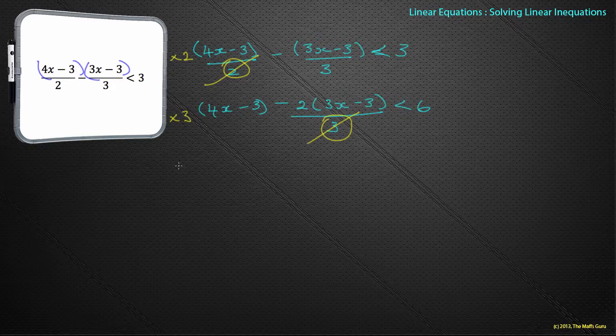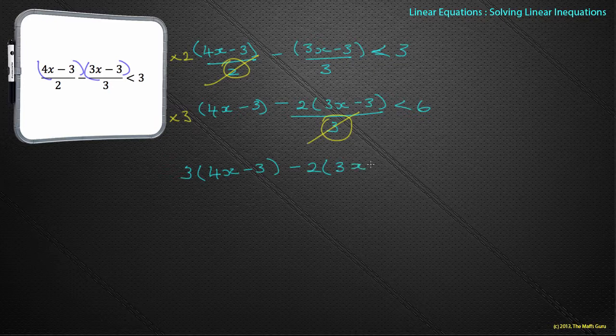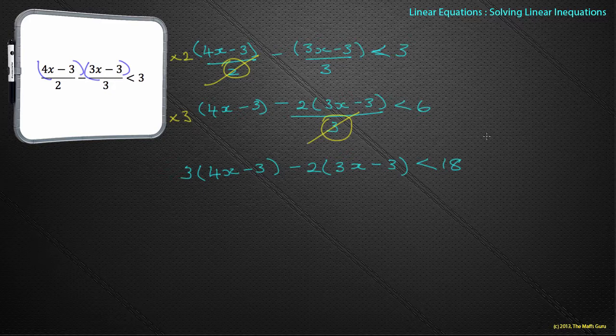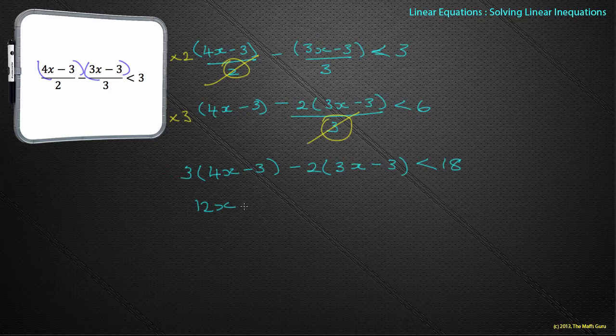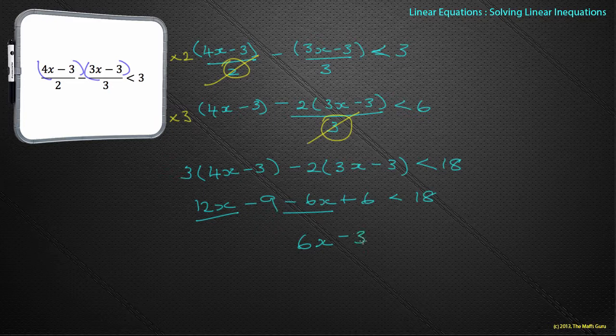Writing it out longhand, I get 3 lots of 4x minus 3 minus 2 lots of 3x minus 3 is less than 18. Here's my prisoners in prison, there's my prison guard. They have to kiss the prison guard. So 3 times 4x is 12x, 3 times minus 3 is minus 9. Minus 2 times 3x is minus 6x, minus 2 times minus 3 is plus 6, is less than 18. Let's collect like terms. I've got 12x minus 6x which is 6x, and I have minus 9 plus 6 which is minus 3, is less than 18.